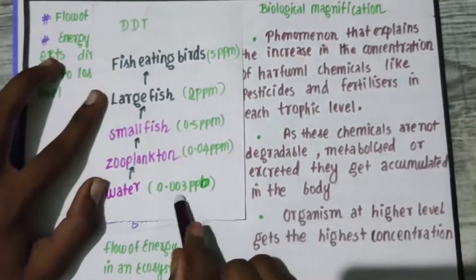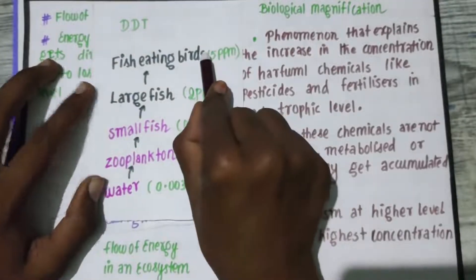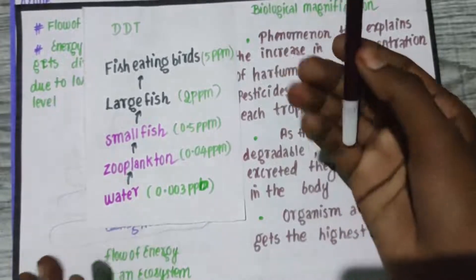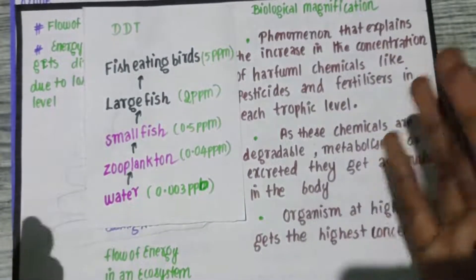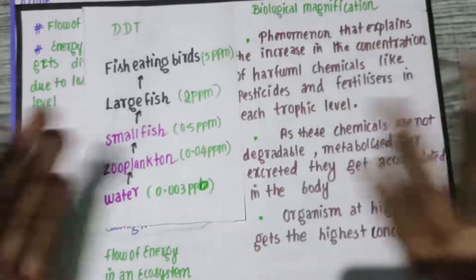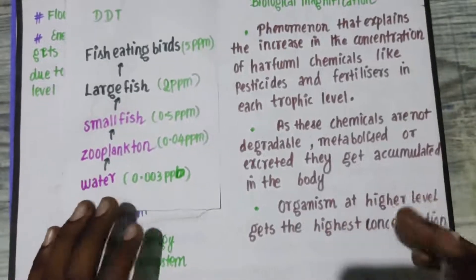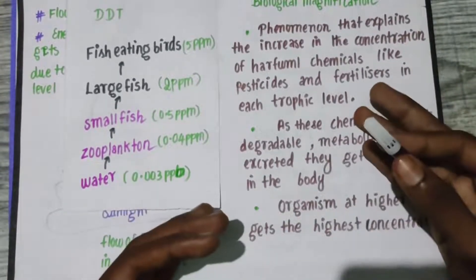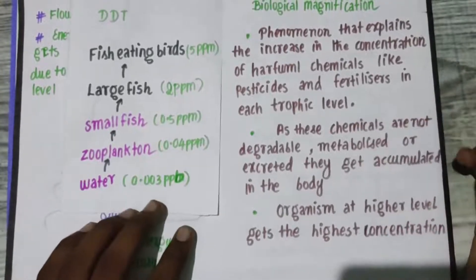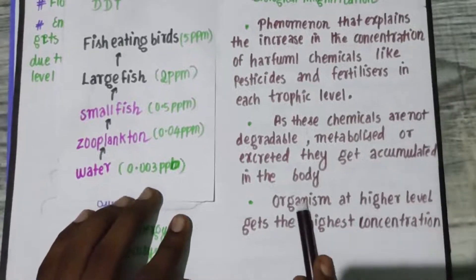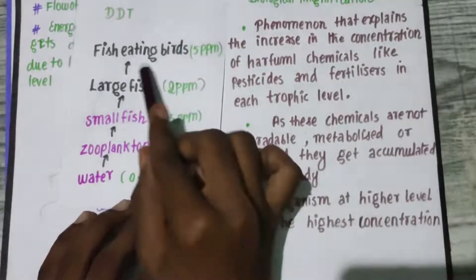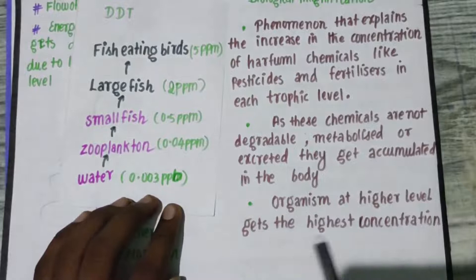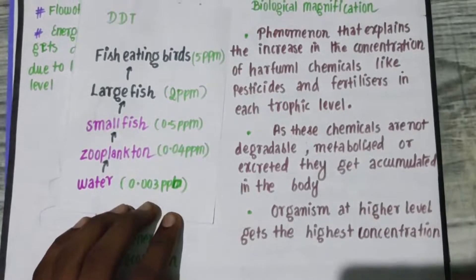If you look at the concentration values, you can see them increasing. The chemical is lipophilic — it will increase and will not be metabolized or excreted from the body, so it accumulates. This is biological magnification. Organisms at the higher trophic level get the highest concentration.